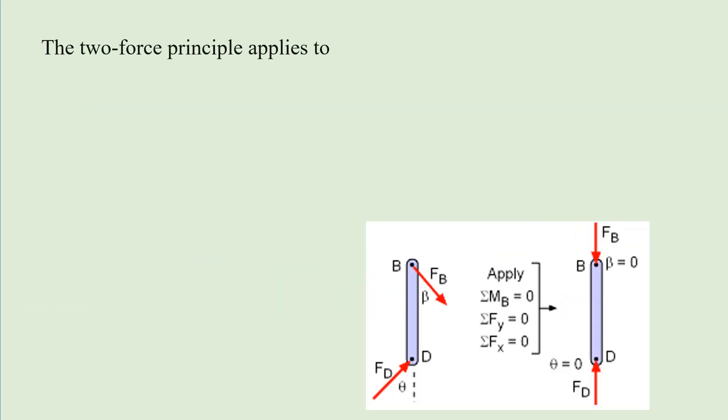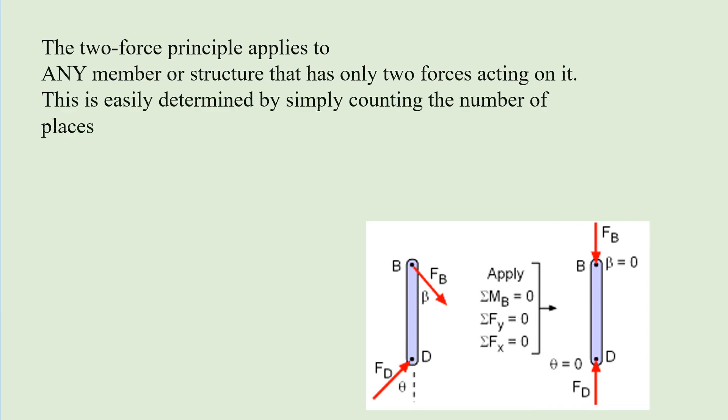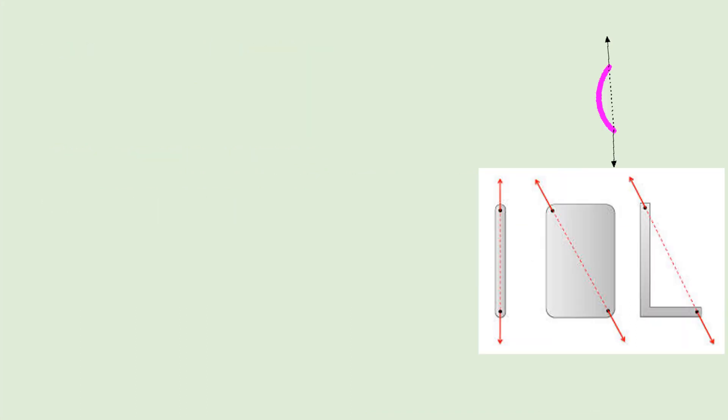The two-force principle applies to any member of a structure that has only two forces acting on it. This is easily determined by simply counting the number of places where the forces act on that member. Remember the reactions are considered to be forces. If they act in two places, it is a two-force member.